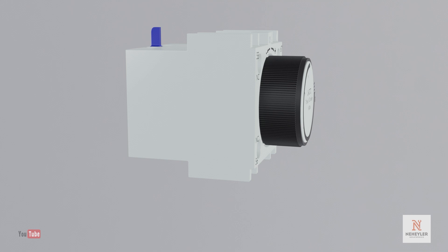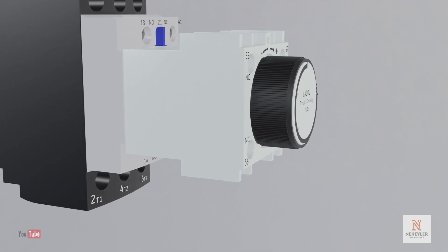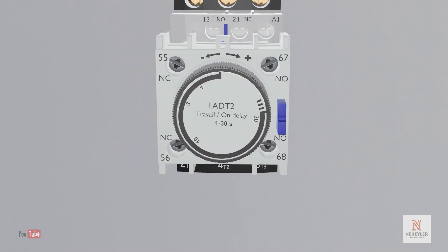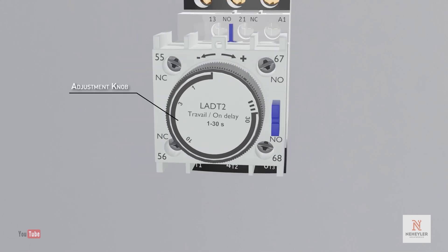To understand better, let's focus on this type of pneumatic timer that is on delay. This timed block requires a contactor for its activation. On the front there is an adjustment knob which we can turn to adjust a delay time between 0.1 second and 30 seconds.